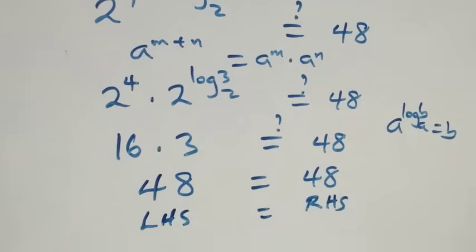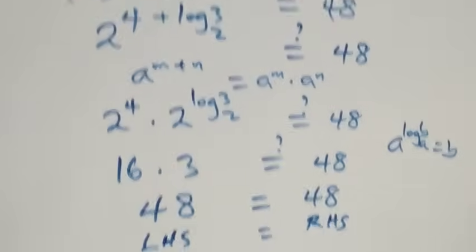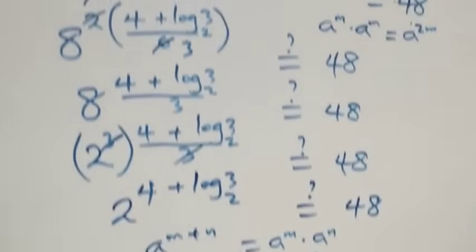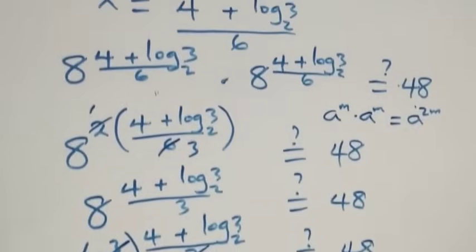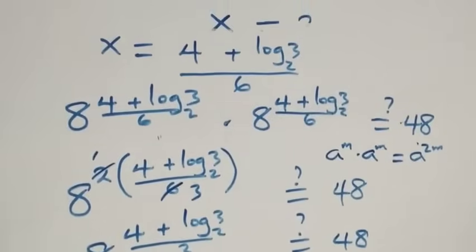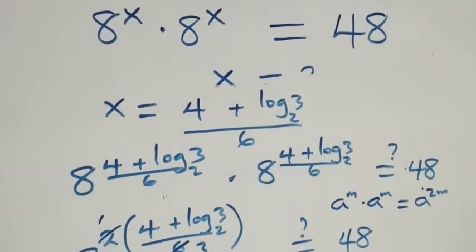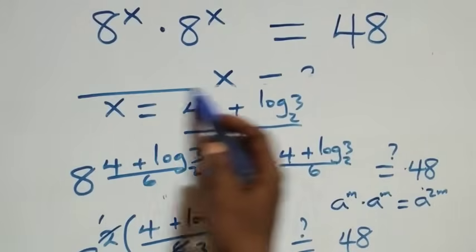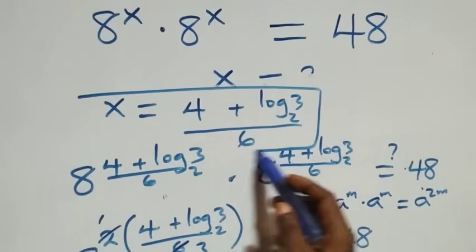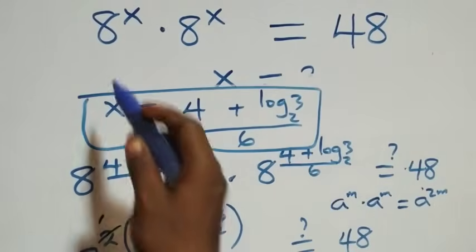Hence, we conclude that x equals (4 + log₂3) / 6 satisfies the given equation. The left-hand side equals the right-hand side.